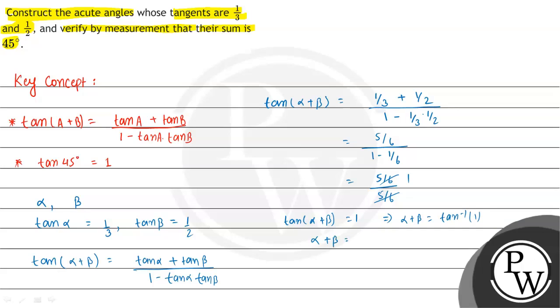Or in degree measure, it equals 45 degrees. Hence, the sum of acute angles alpha plus beta is equal to 45 degrees. This is the final answer of the given question. I hope you understood the solution. Best of luck, thank you.